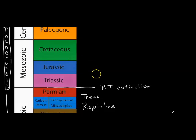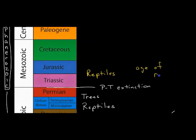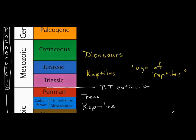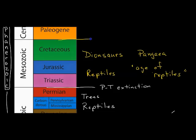Then we come to the Mesozoic era, and this is where reptiles dominate — it's the age of reptiles, and more specifically the age of dinosaurs. This is the time when dinosaurs ruled the Earth. It's also the time when Pangea was formed. The Mesozoic era then ended with another mass extinction — the one that killed the dinosaurs — known as the K-T extinction.